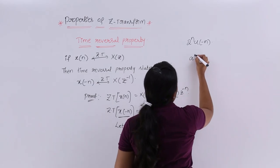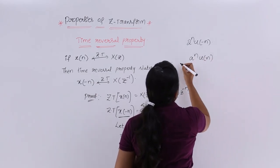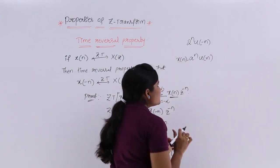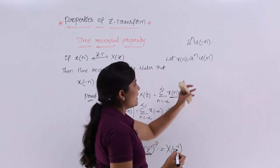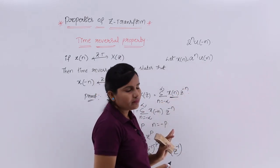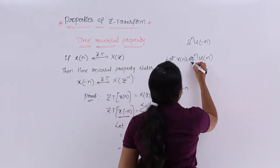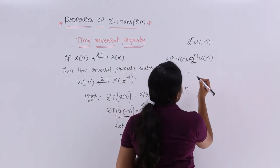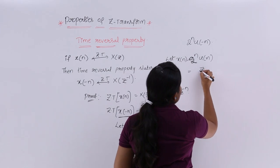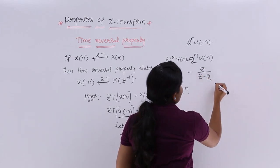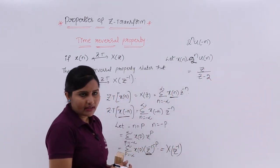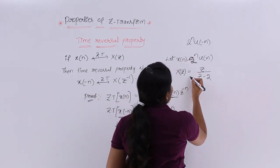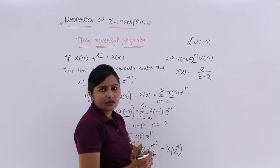Finding Z-transforms with U(-n) is very tricky; you sometimes get infinity. But by using the time reversal property, we can easily find the Z-transform of this type of signal. We know the Z-transform of A^n·U(n). Let X(n) = A^n·U(n) — for this we know the Z-transform is Z/(Z - A). So for A = 2, X(Z) = Z/(Z - 2).